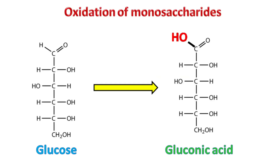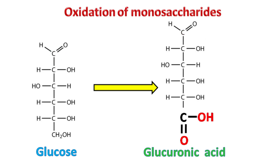Oxidation. The aldehyde group, the keto group, or the terminal hydroxyl group can be oxidized to form acids. In the case of glucose, the oxidation of the aldehyde group leads to the formation of gluconic acid, while the oxidation of the terminal alcohol group leads to another acid product.